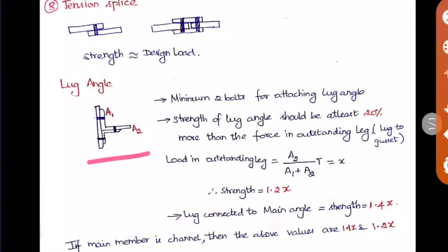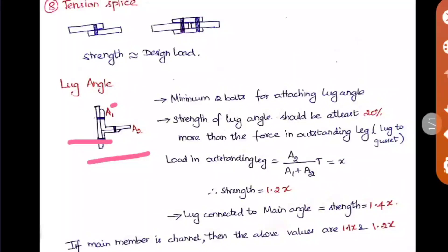Here, A1 is the area of the connected leg and A2 is the area of the outstanding leg of the normal angle, not the lug angle. For the lug angle, at least a minimum of two bolts should be given — one bolt with the gusset plate and another bolt with the main angle.